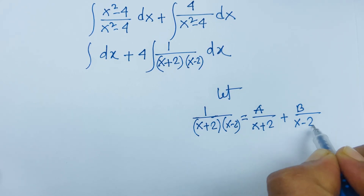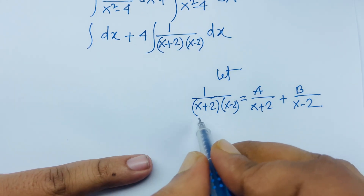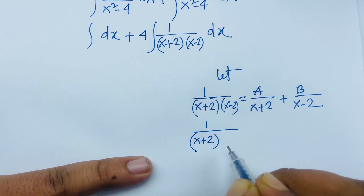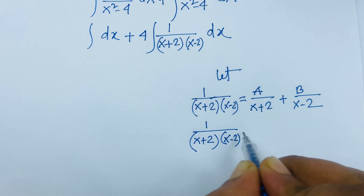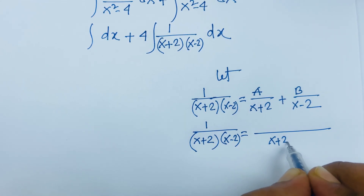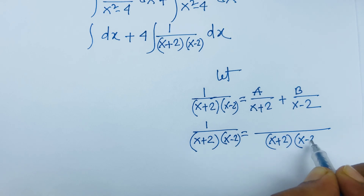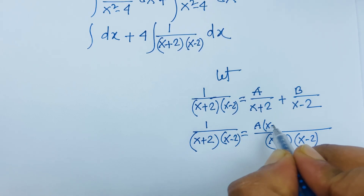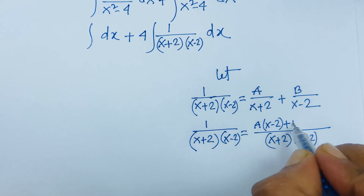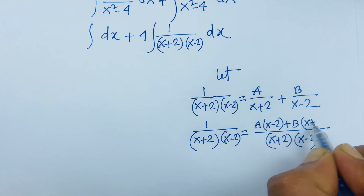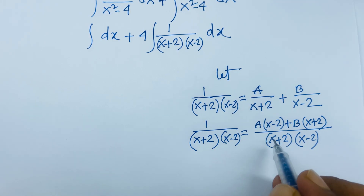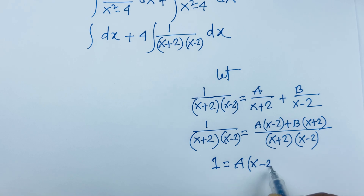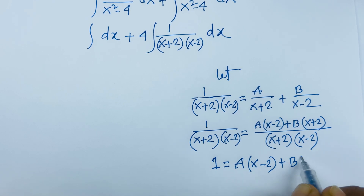Multiplying both sides by (x+2)(x-2), the least common denominator, we get 1 equals A(x minus 2) plus B(x plus 2). Now we use this equation to find the values of A and B.